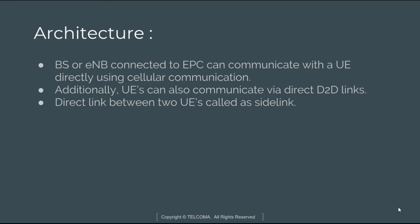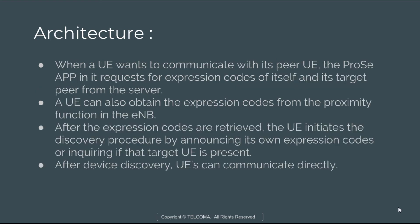Various proximity services applications can be installed in a user equipment, and they may exchange data with an application on a remote server. In peer-to-peer communication, the proximity application requests expression codes from the server. The UE can also obtain expression codes from proximity functions defined in the eNodeB.